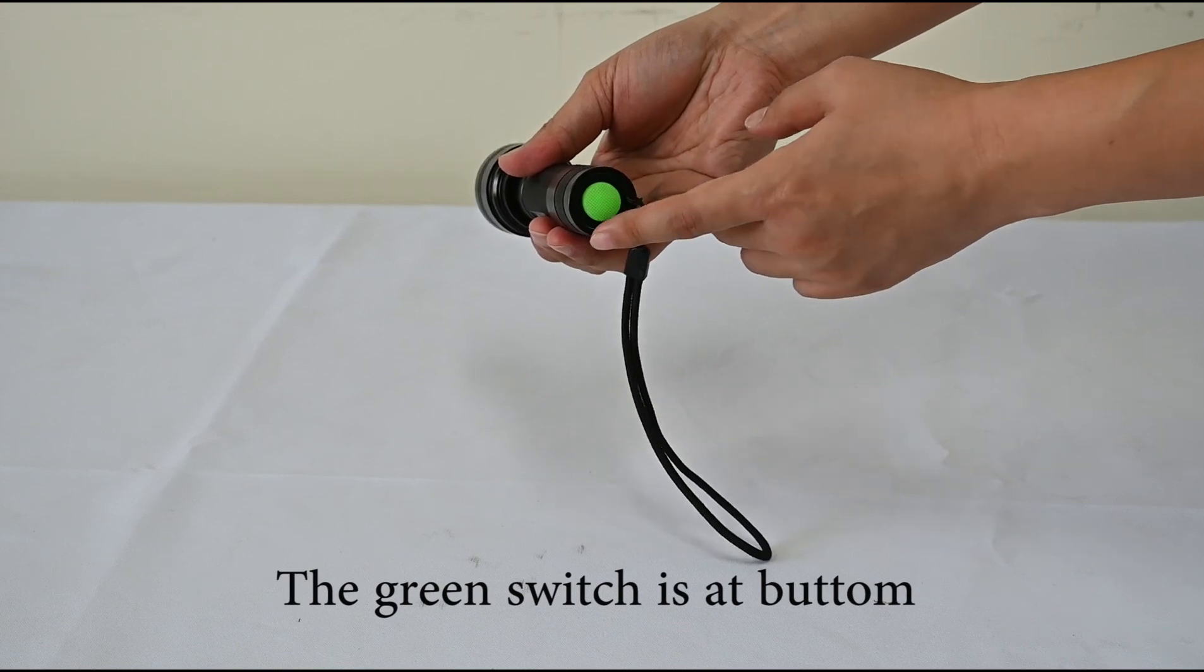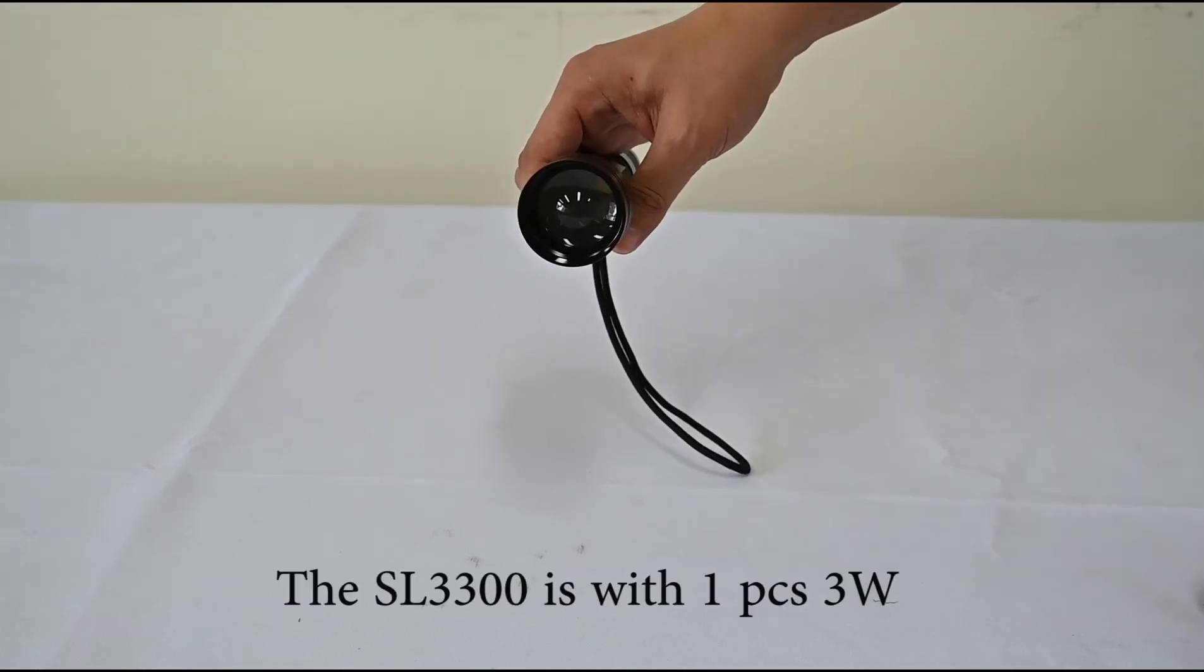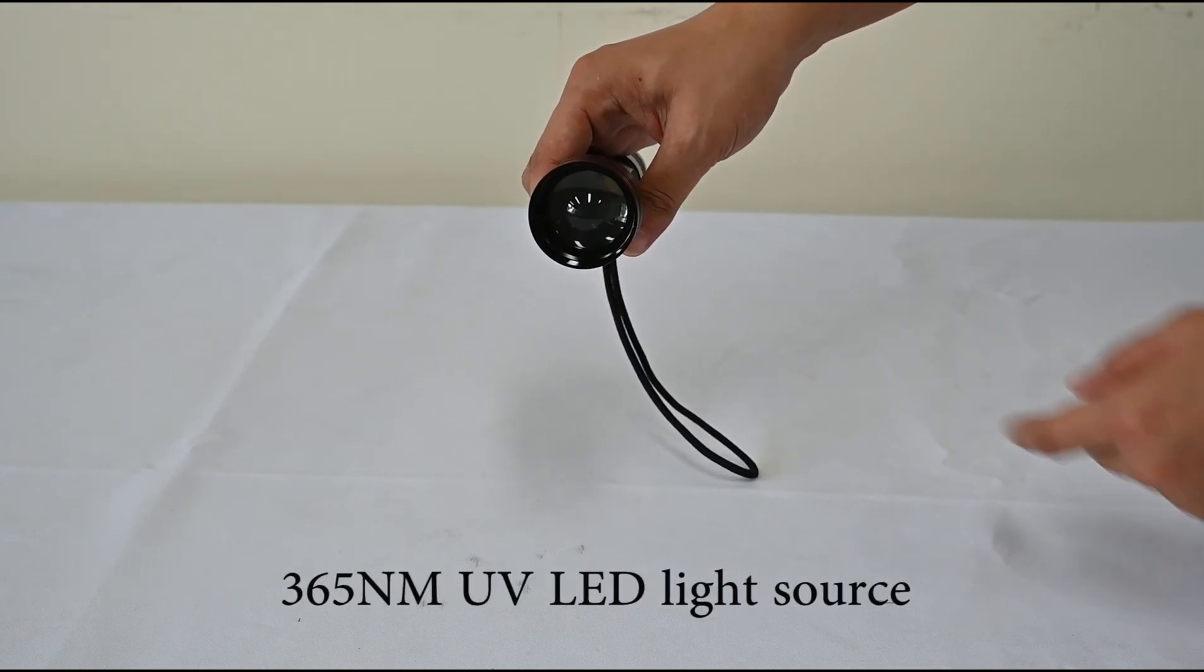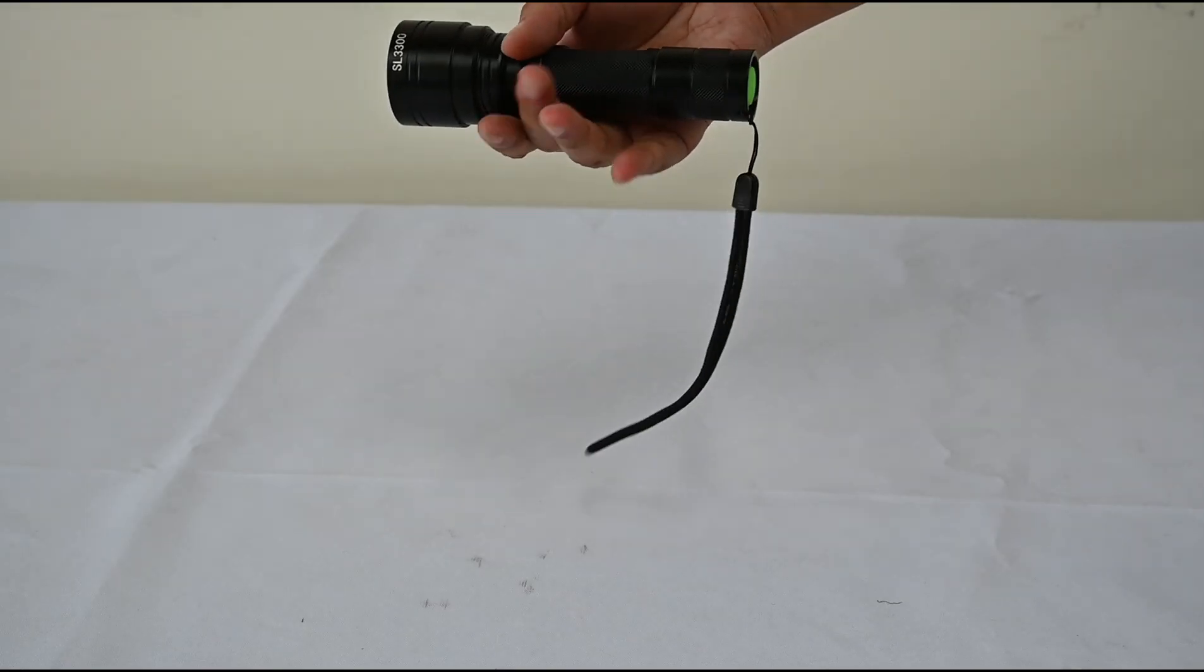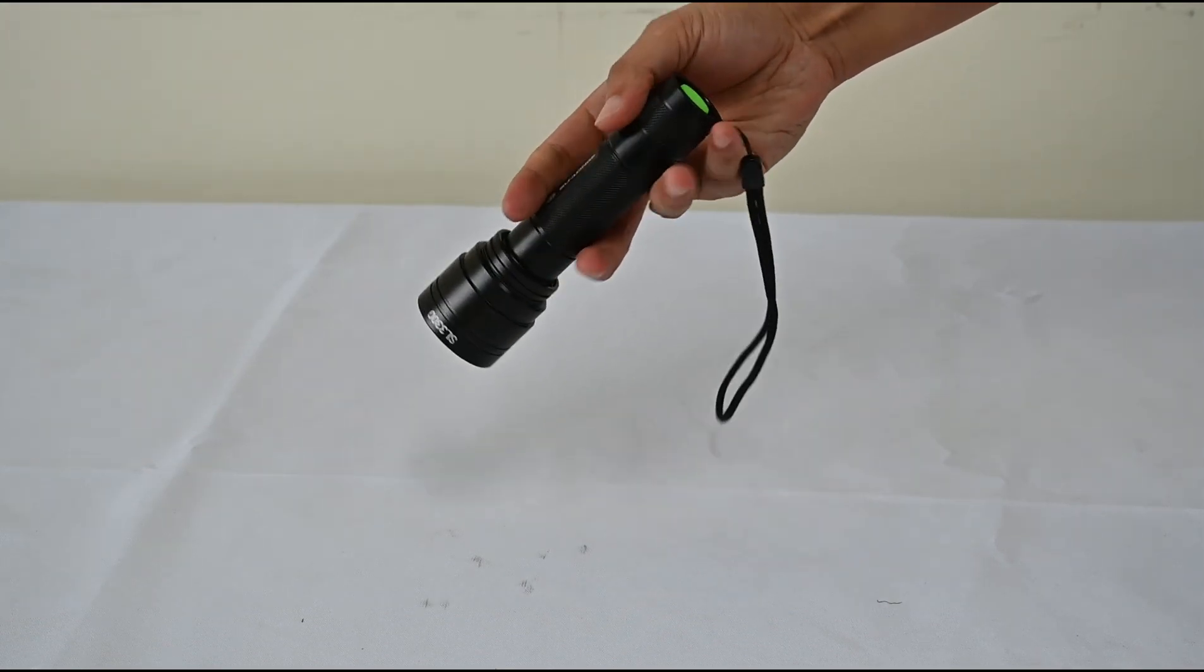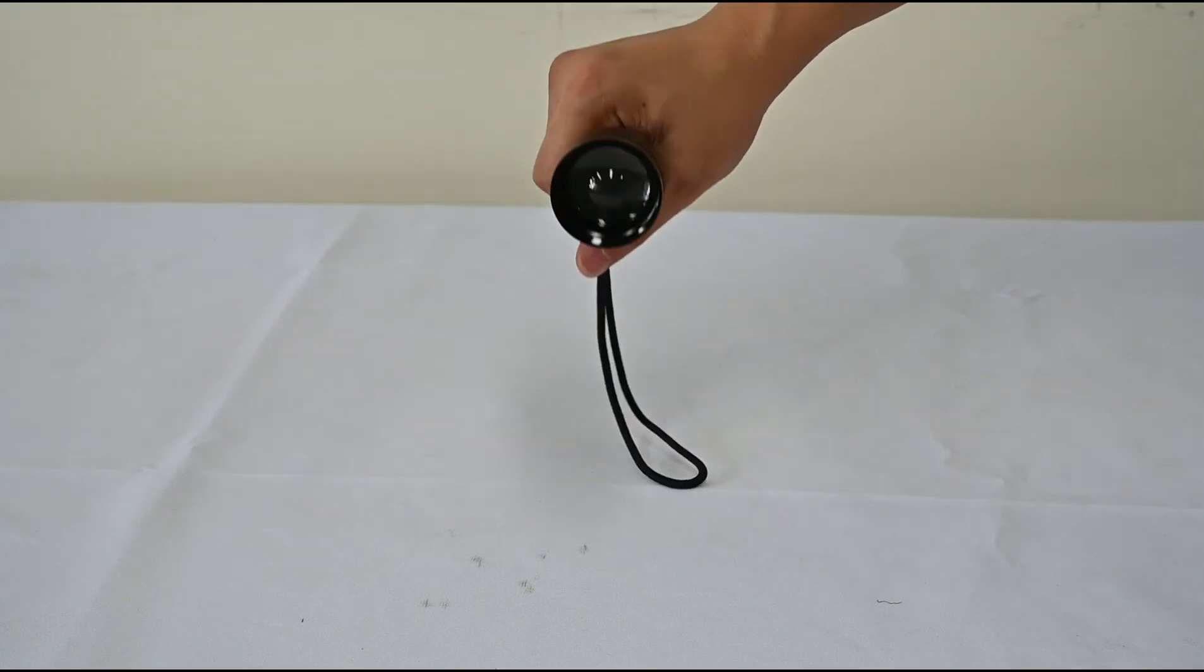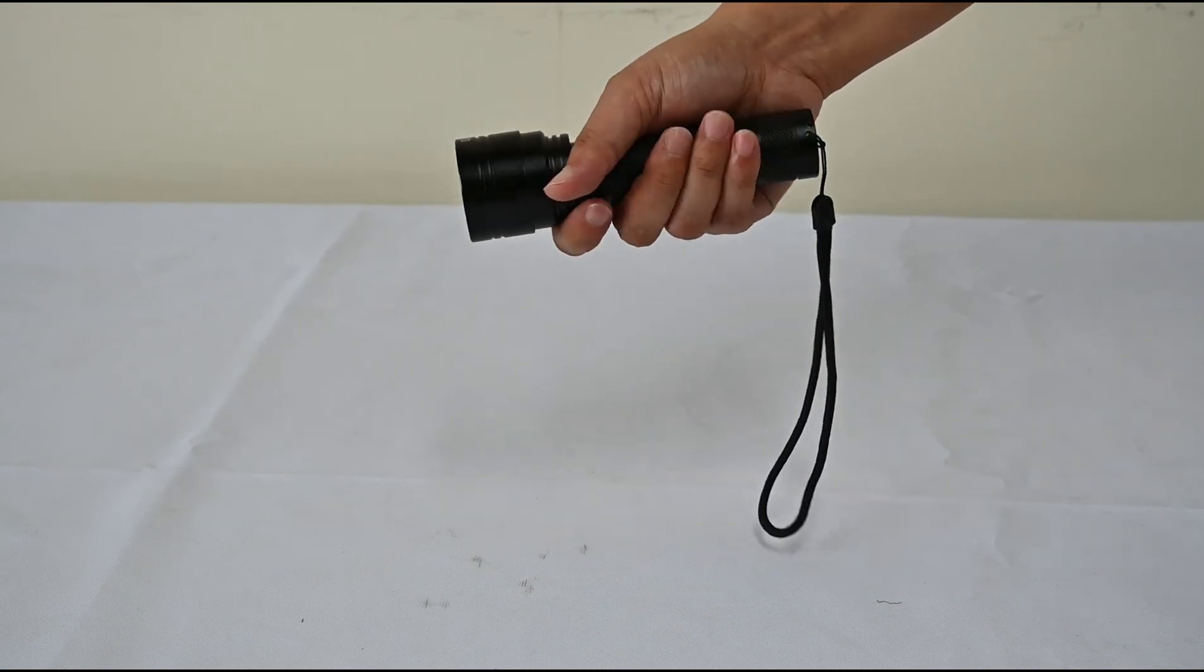The green switch is at the bottom. SL3600 has one piece 3W 365nm UV LED source. The design is quite suitable for single-hand operation. It is quite suitable for quick inspection of some inaccessible areas.